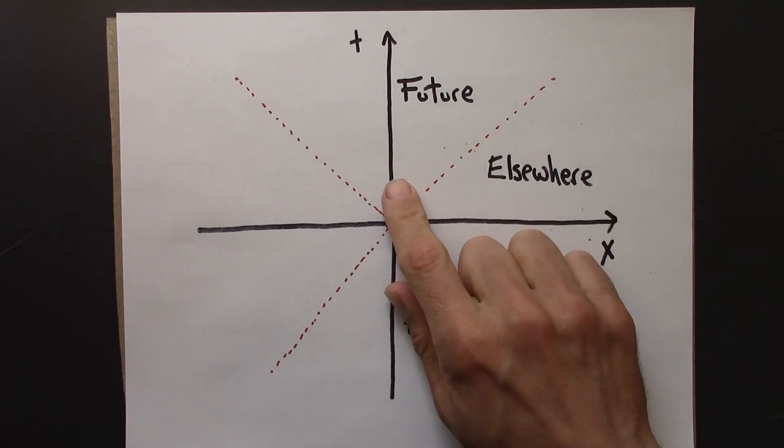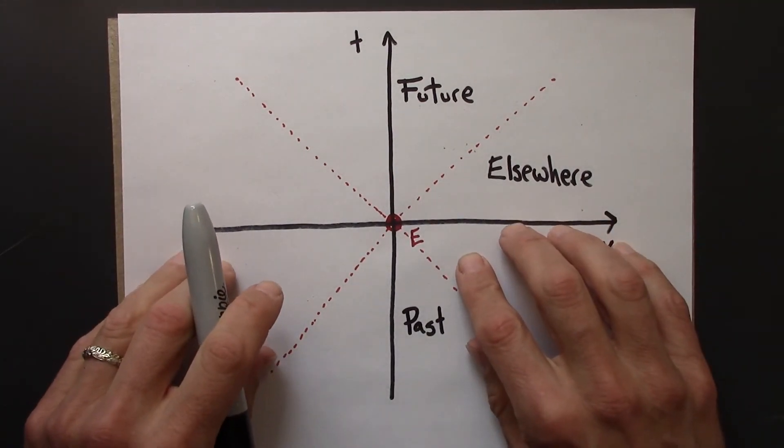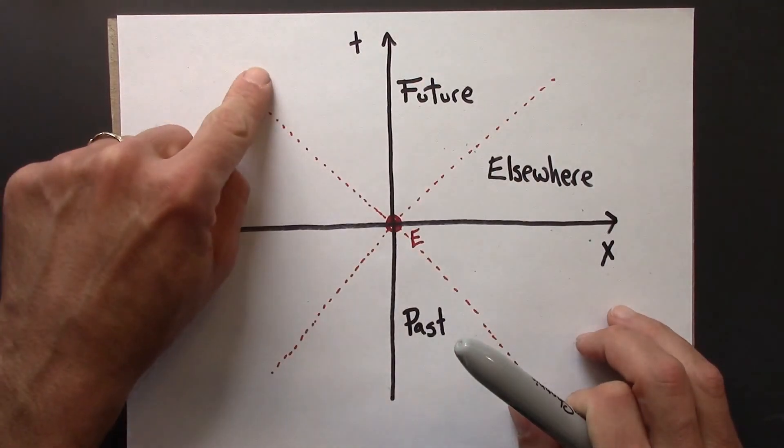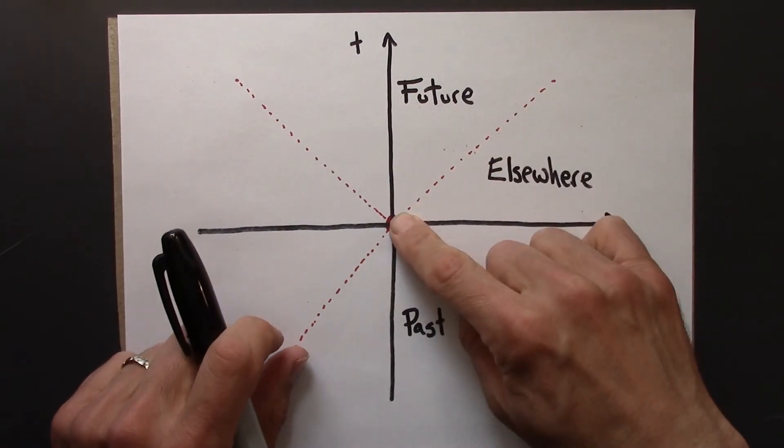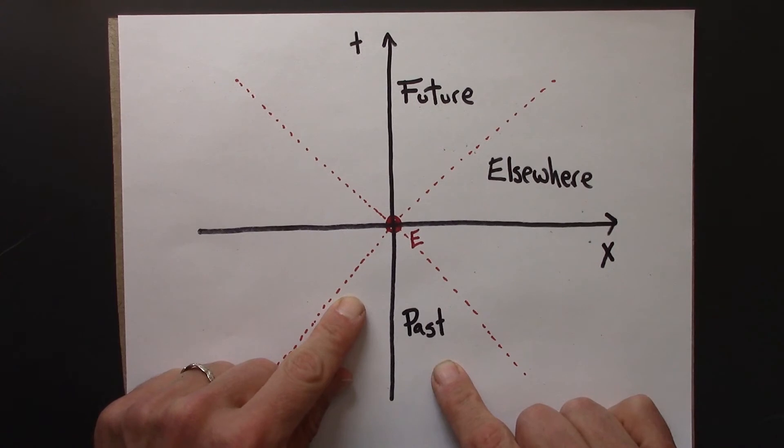And lastly, I just want to introduce a little bit more notation. This future is sometimes called the light cone or the future light cone for this event. And this would be sometimes called the past light cone for this event.